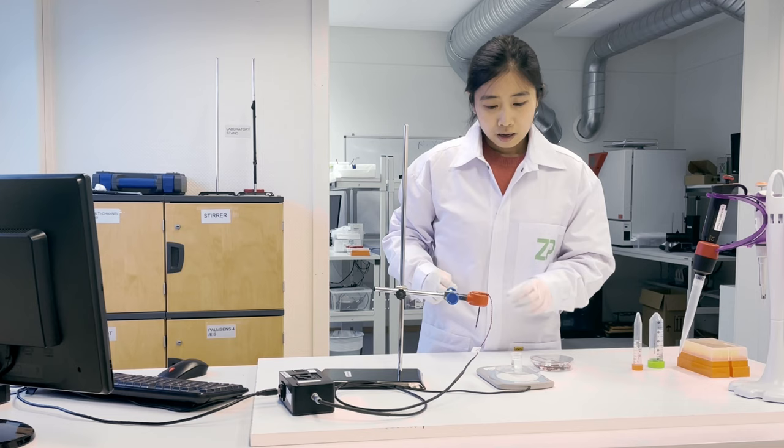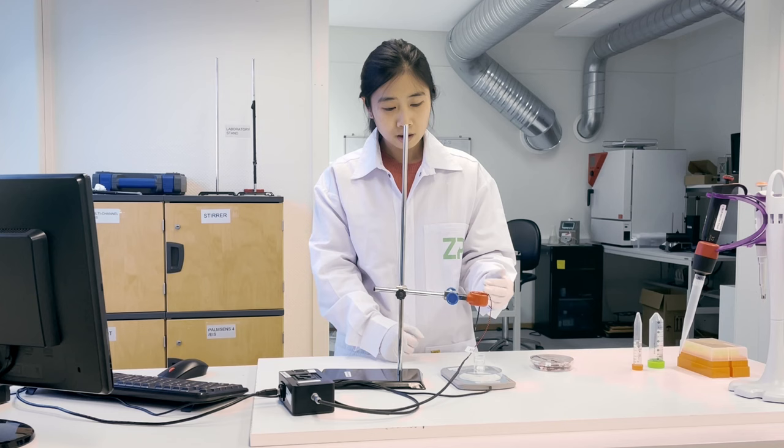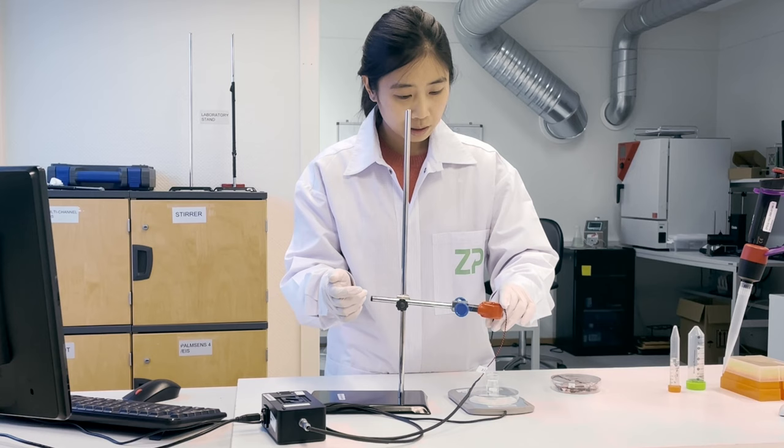And now we need to turn on the magnetic stirrer. Make sure the magnetic stirrer bar is in the middle of the solution so that it has a lower chance to be hitting the wall to cause some electronic noise.